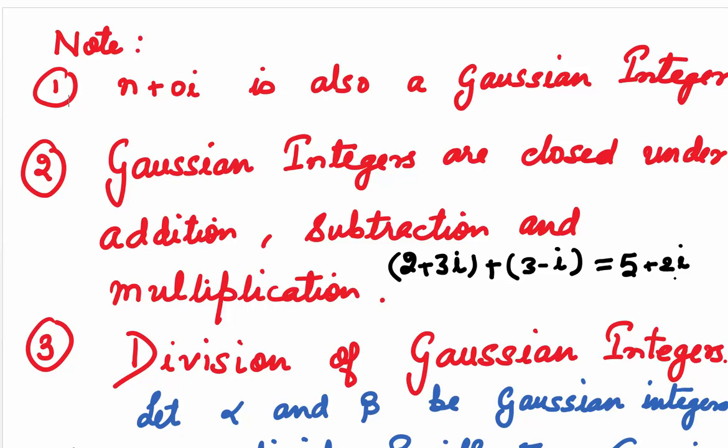In the same way, when we subtract and multiply two Gaussian integers, we will still get a Gaussian integer. So we say they are closed under the operations of addition, subtraction, and multiplication.